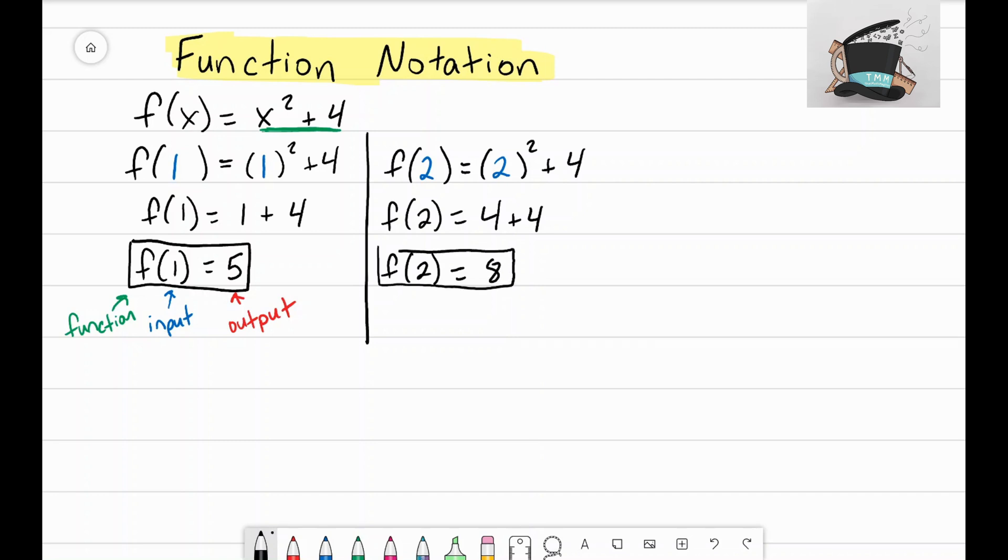So again, let's recap how we want to read this. Math is all about learning how to read the numbers as a sentence. This says f of 2 equals 8. That means the reader knows that when 2 is my input and it's put into this function f, the output is 8.